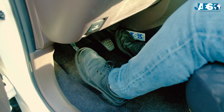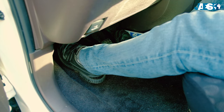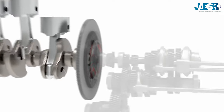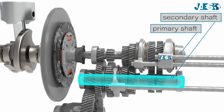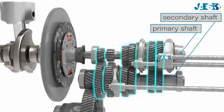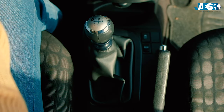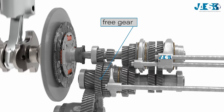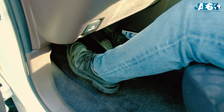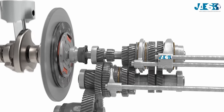By fully pressing the clutch pedal, the clutch disc moves away from the flywheel, thus disconnecting the rotation between the engine and the gearbox. The pairs of gears of the primary and secondary shaft are always meshed with each other, but one of the two is not directly connected to its shaft. By moving the gear selector to first gear, the free gear is connected to its shaft. At this point, by releasing the clutch pedal, the gearbox primary shaft reconnects to the engine and the car moves.